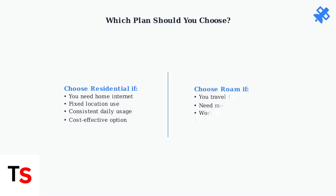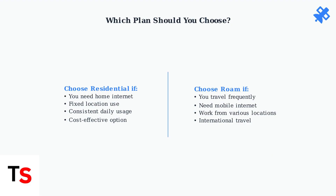Choose Residential if you need reliable Internet at a fixed location like your home or office. Choose Roam if you travel frequently, work remotely from various locations, or need Internet while on the move. Both plans offer reliable satellite Internet with similar performance characteristics. Your choice should align with whether you need Internet at a fixed location or require the flexibility to stay connected while traveling.